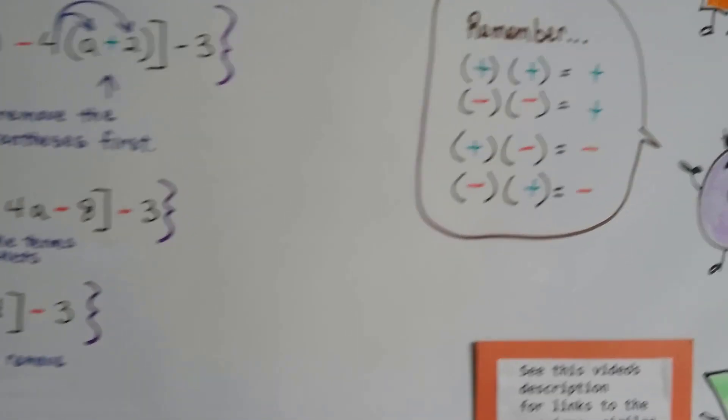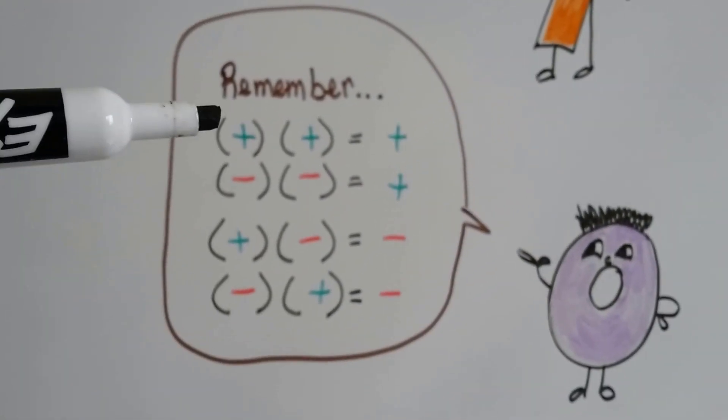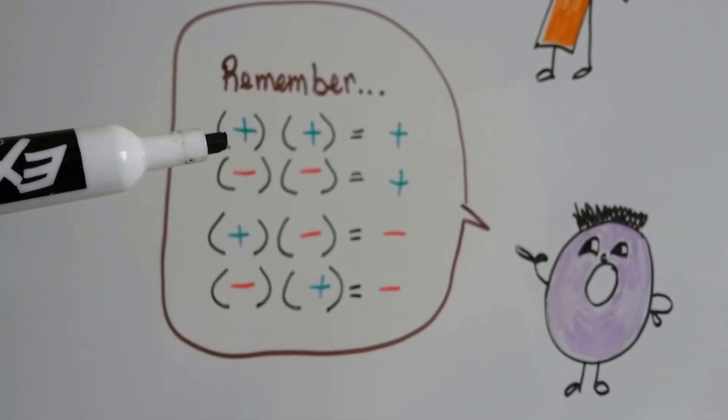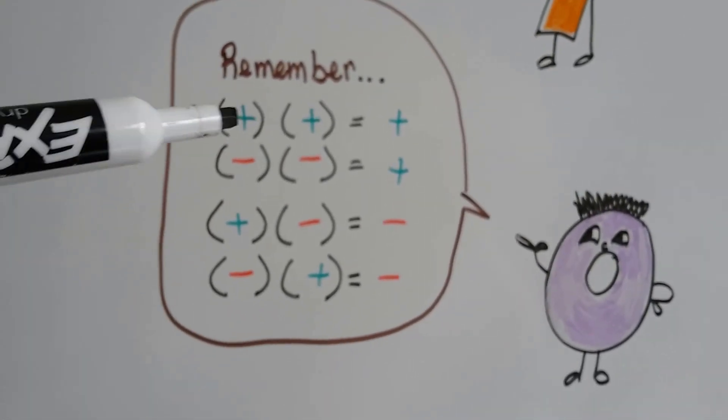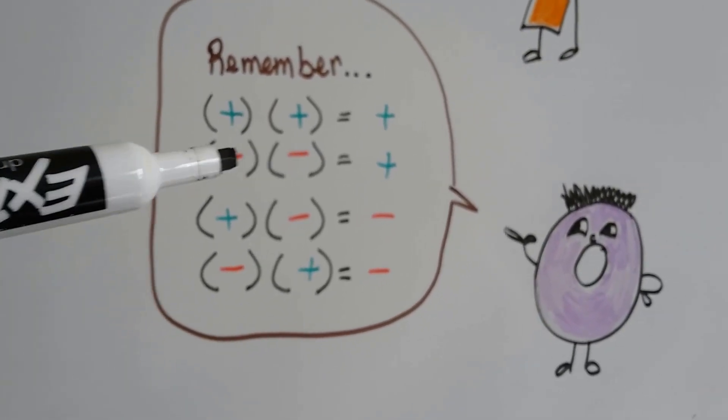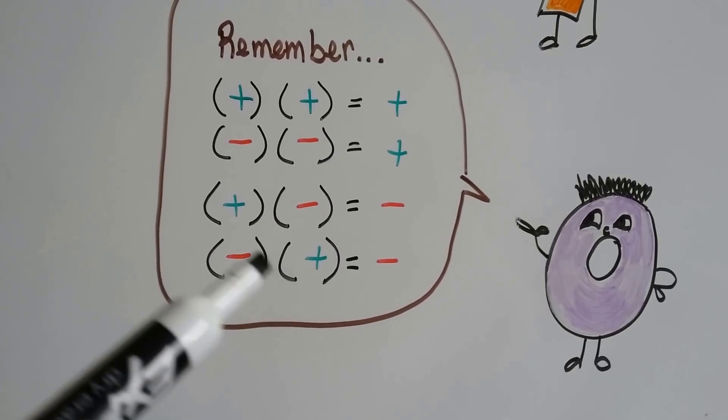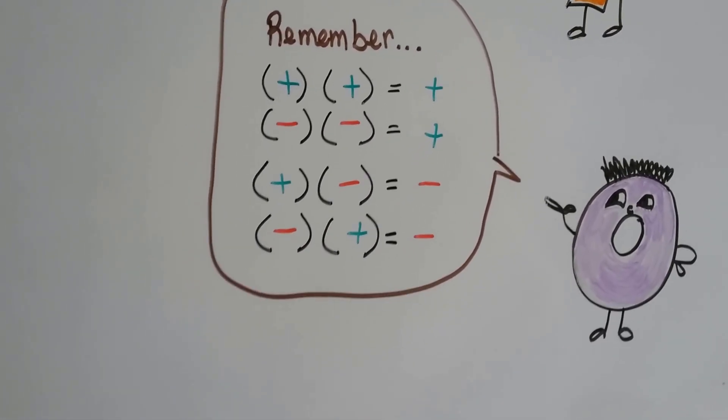So just remember that when you have two positives, it's going to make a positive. And two negatives are going to make a positive because they're like signs. These are alike, and these negatives are alike. So they're going to make a positive. And when you have signs that are unlike, when they're different from each other, they're always going to make a negative.